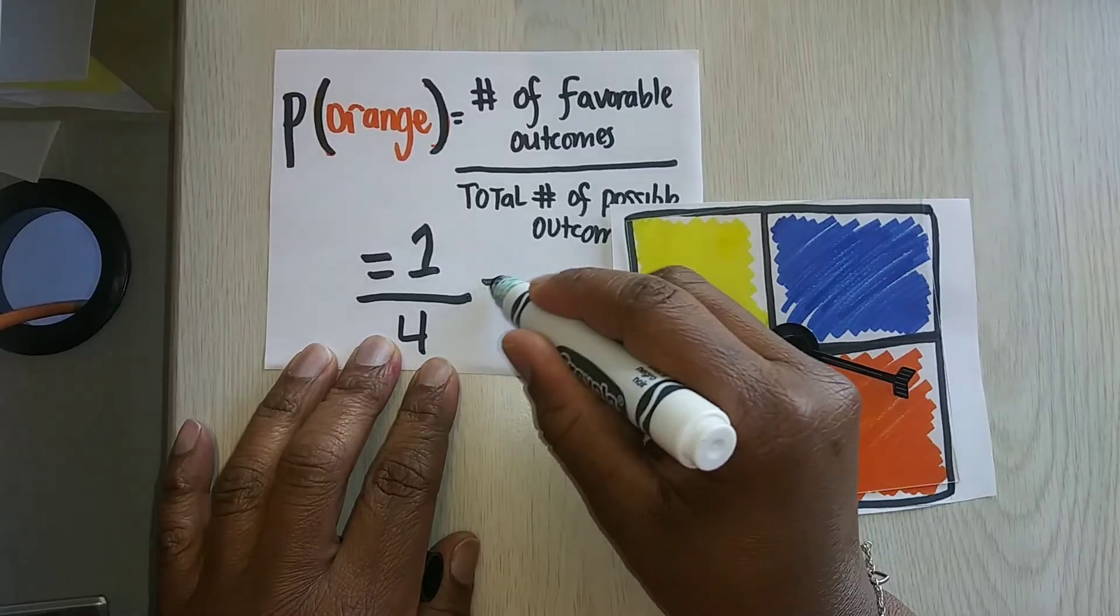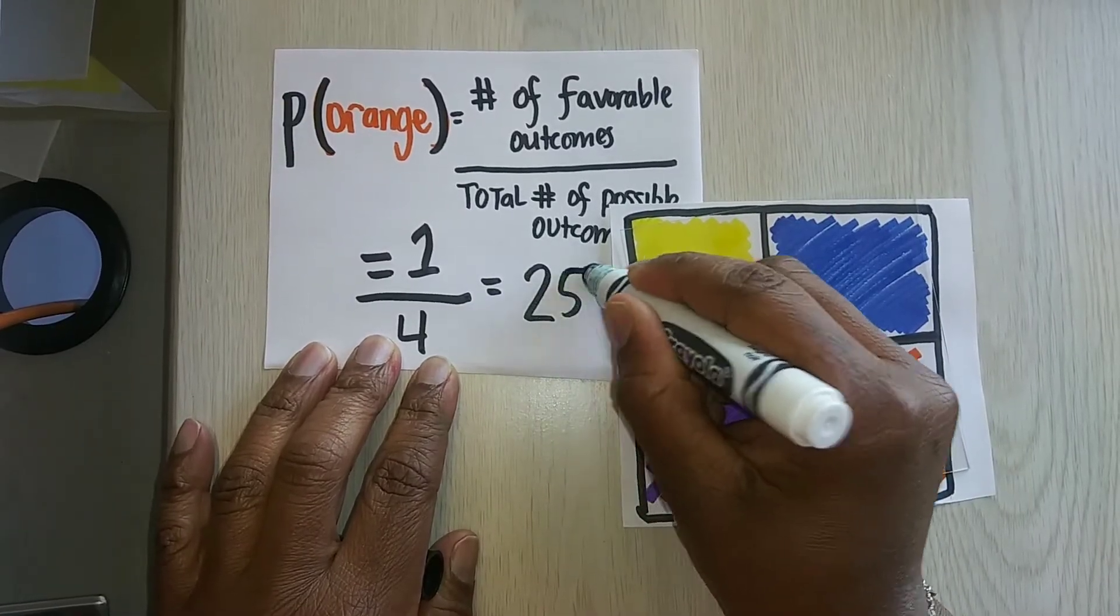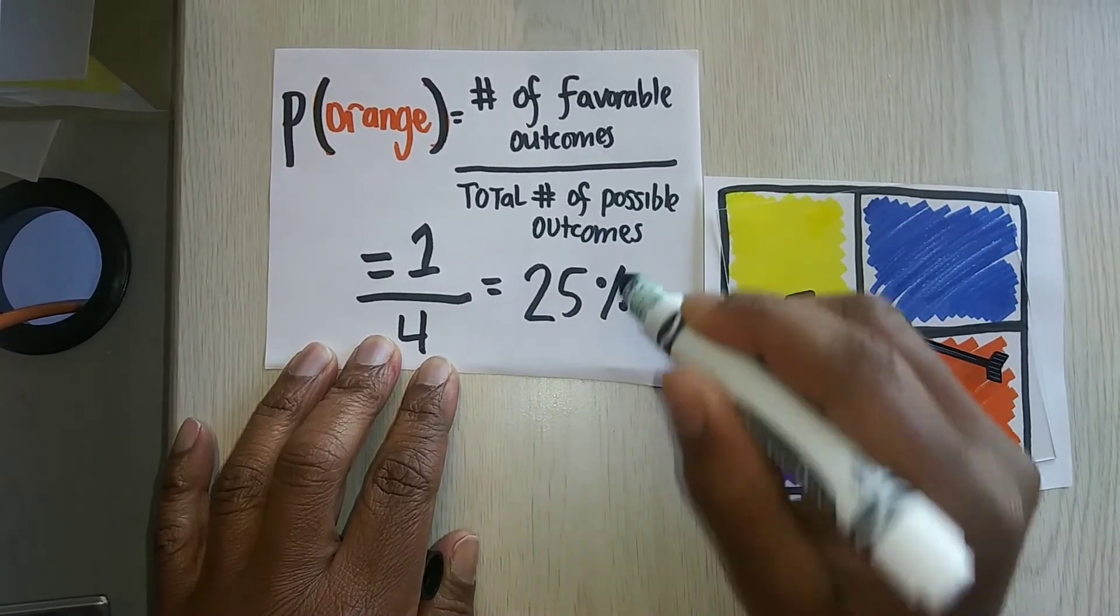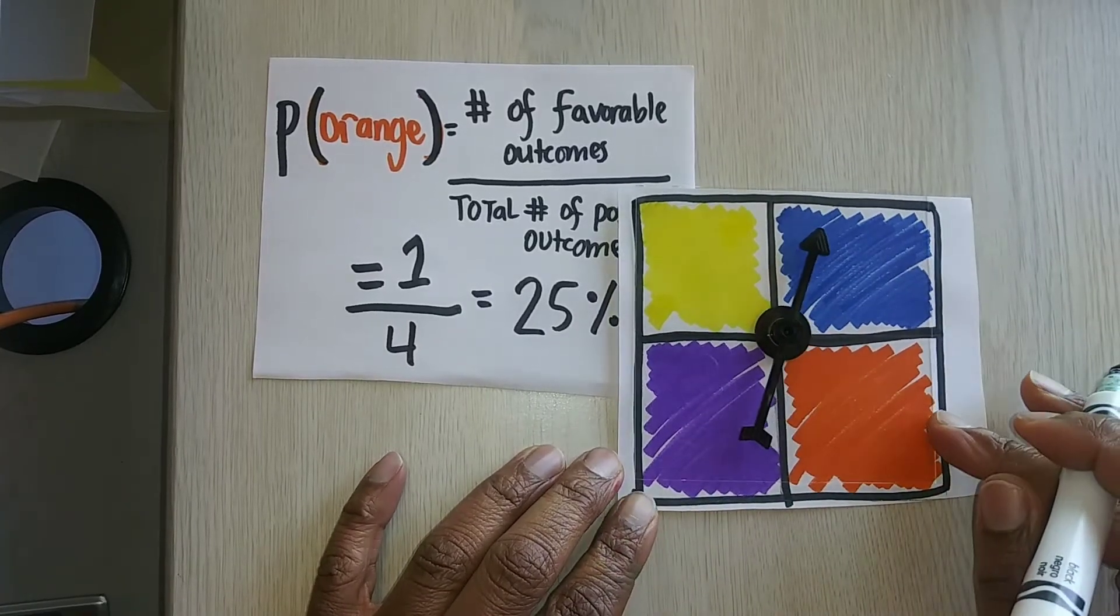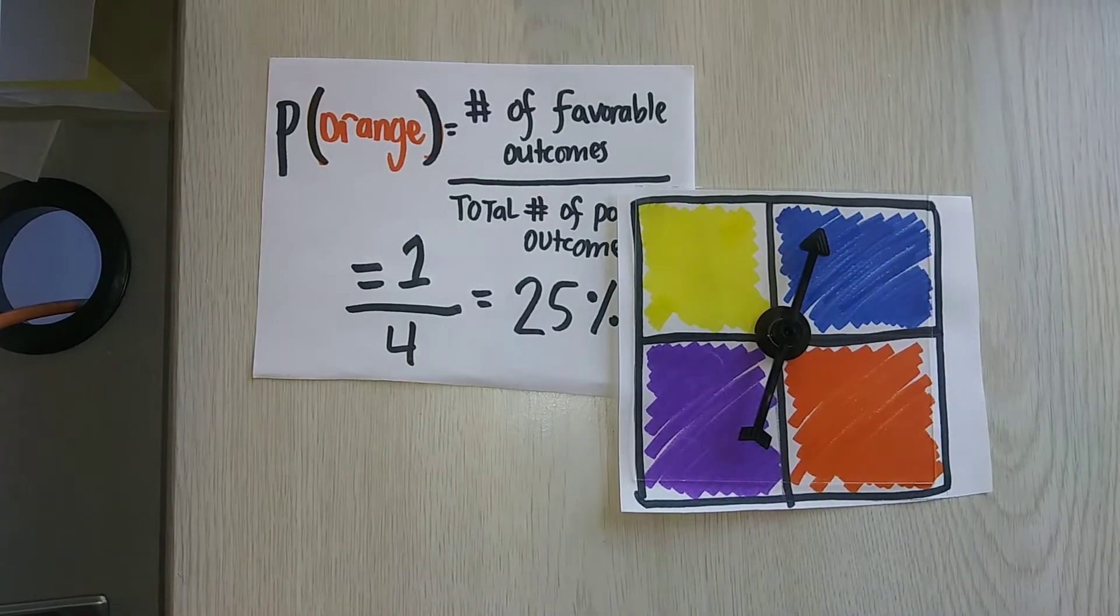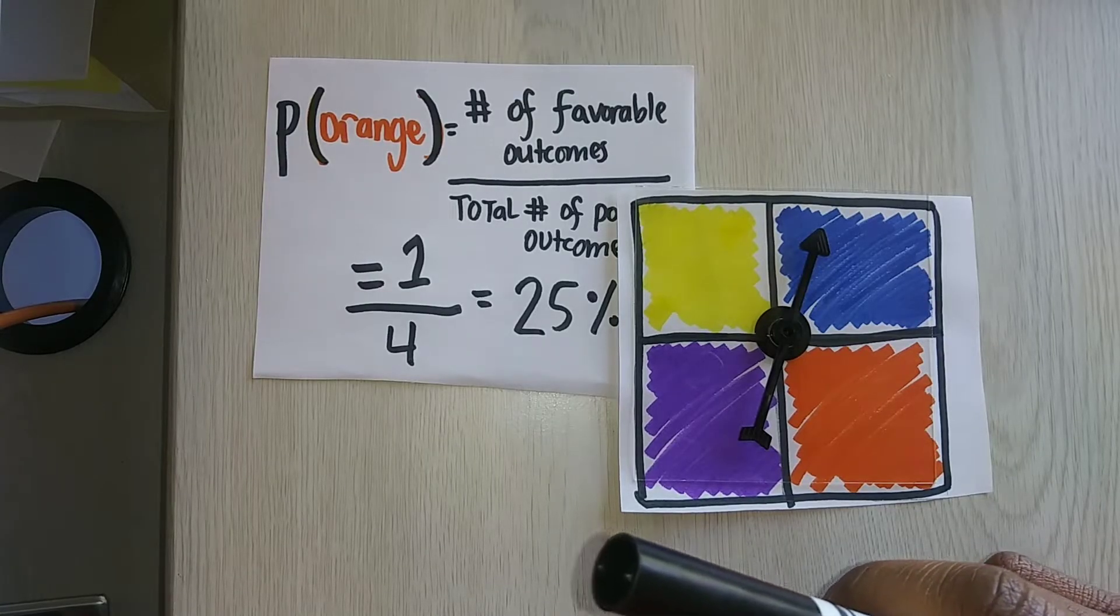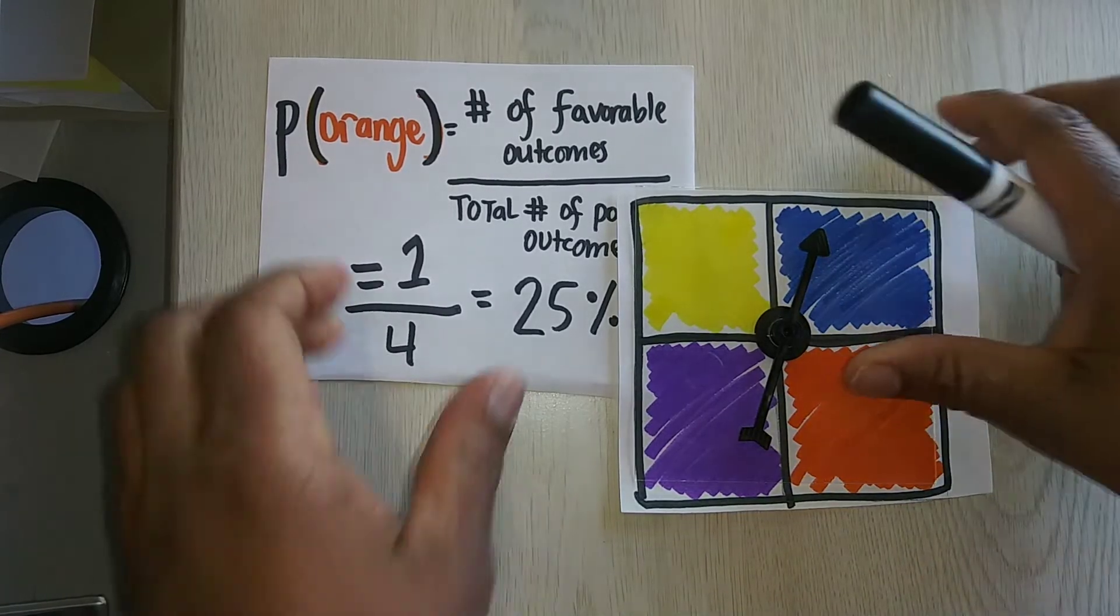So according to math, there's a 25% chance that this spinner, once I spin it, will land on orange. Now, sometimes it happens and sometimes it don't. And we'll get into that, which is called experimental probability in a later video.